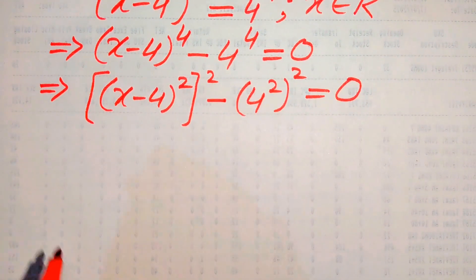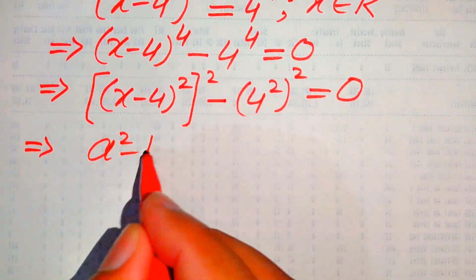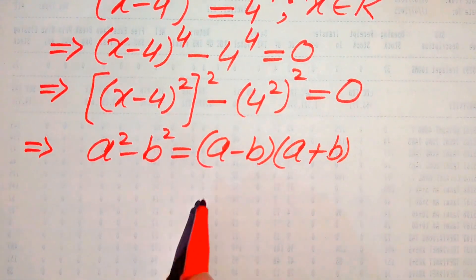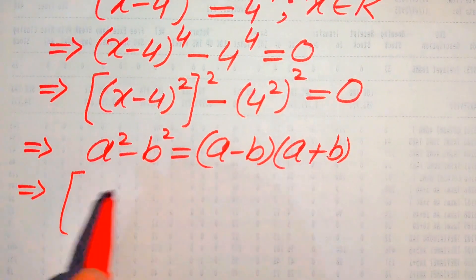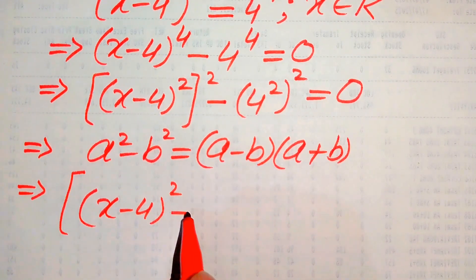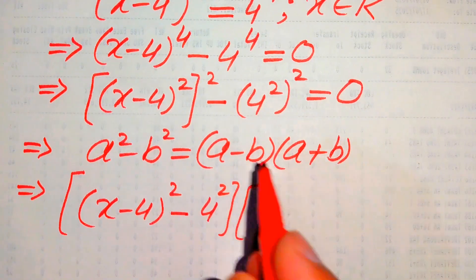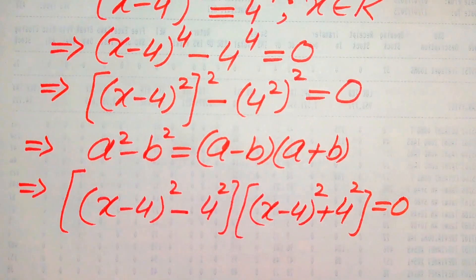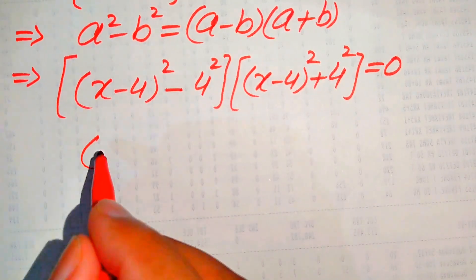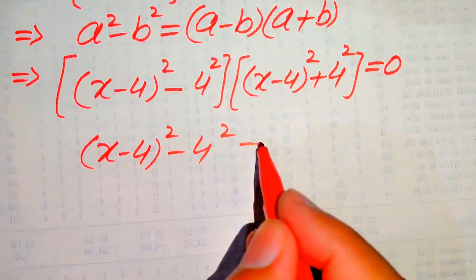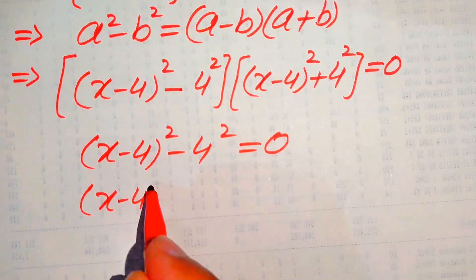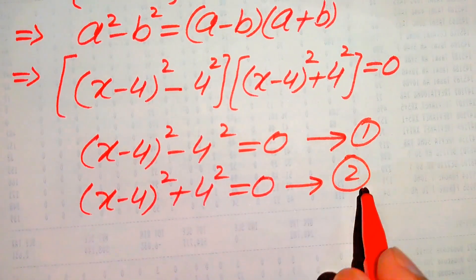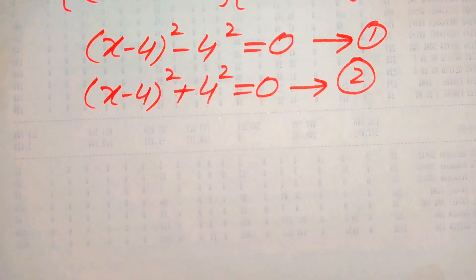Here we use the algebraic formula a squared minus b squared equals (a minus b)(a plus b). Applying this, our equation becomes [(x minus 4) squared minus 4 squared] times [(x minus 4) squared plus 4 squared] equals 0. We divide this into two cases: Equation 1 is (x minus 4) squared minus 4 squared equals 0, and Equation 2 is (x minus 4) squared plus 4 squared equals 0.